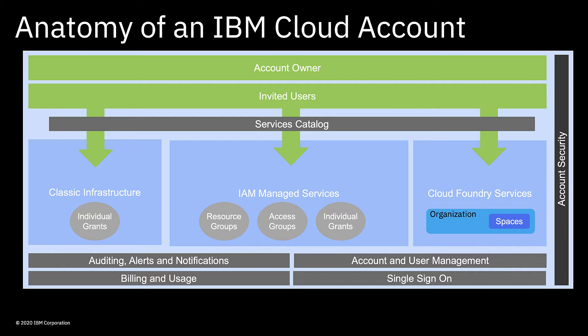Next up we have our services catalogue. Right now there are over 190 services in the catalogue that you can choose to provision in your account. Within a few clicks and taps of your keyboard you can have some pretty complex services up and ready to go within a few minutes. In very general terms you can divide those services into three different groups: classic infrastructure, IAM managed services, and Cloud Foundry services. The reason I've grouped them like this is that they have different permission systems behind them, for the time being at least.